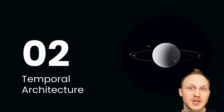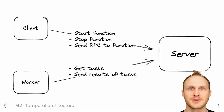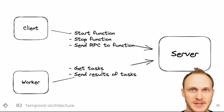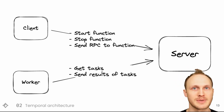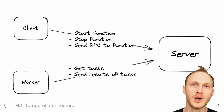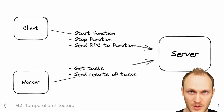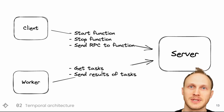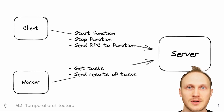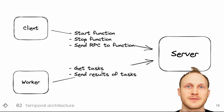Now that we have a better sense of what durable execution is, let's get into how we implement the system that provides it. At a high level, there are three parts of the system. There's a client library that you use to start durable functions, stop them, or send RPCs to them. It talks via gRPC to the server, which saves the progress of the function to the database. There's a worker, which uses one of our language runtimes — we support Go, Java, Python, Node, PHP, and are working on .NET and Ruby — and has your code. The workers are polling the server for tasks, and when they get a task, they run your code, like calling a durable function or calling a function's RPC handler. Then the worker sends the server the results of running the code.